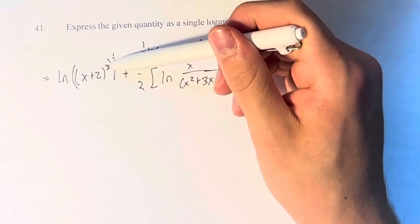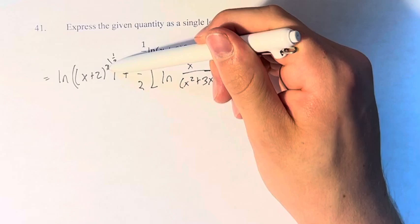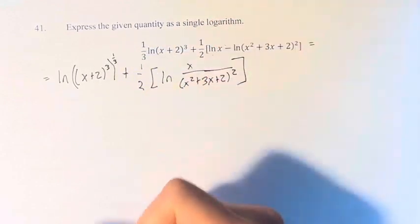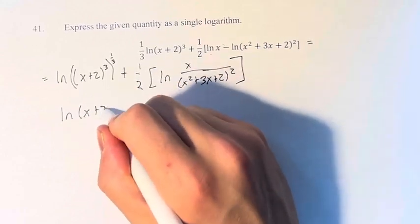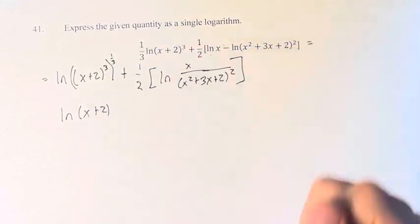x plus 2 to the third power to the one-third power, when you have one power to the other you multiply them. So this is 3 times one-third which is just 1, so this is just x plus 2 to the first power which is just itself.